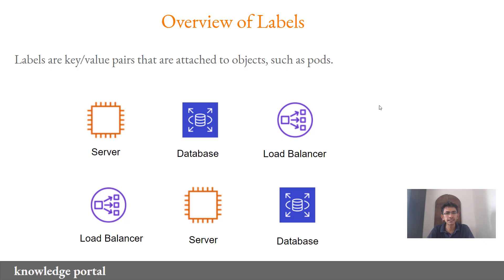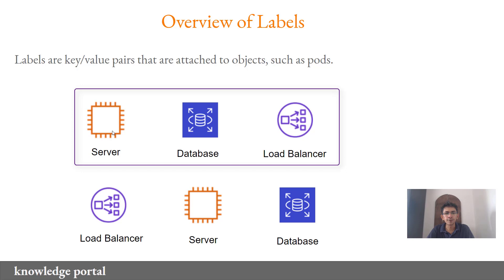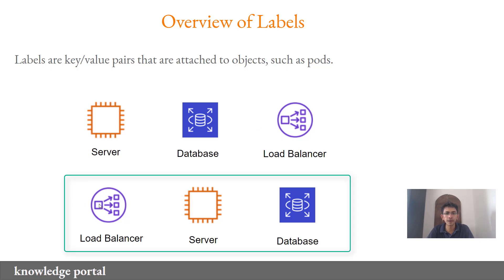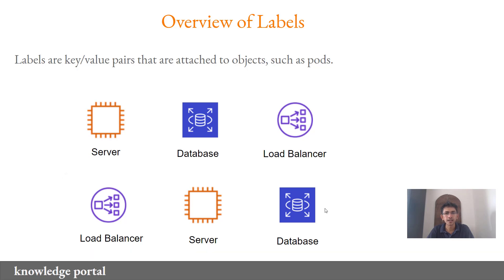Let's understand this with a simple example where you have two distinct sets of environments. The first environment consists of a server, a database, and a load balancer, and similarly a second set of environment consists of a load balancer, a server, and a database. Now if someone tells you to stop all the resources associated with a dev environment, it is very difficult to see which server or which database belongs to the dev environment, because there are no appropriate labels associated with all of these resources.